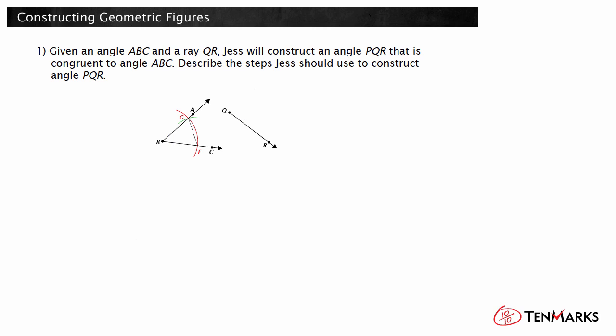Start with angle ABC. One vertex of the triangle will be B. To locate the other two vertices, place the compass point on B and draw an arc that intersects the rays of the angle. This arc is shown in red in the figure. And the intersection points are labeled F and G.